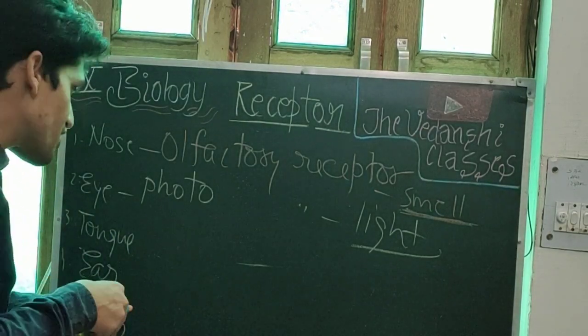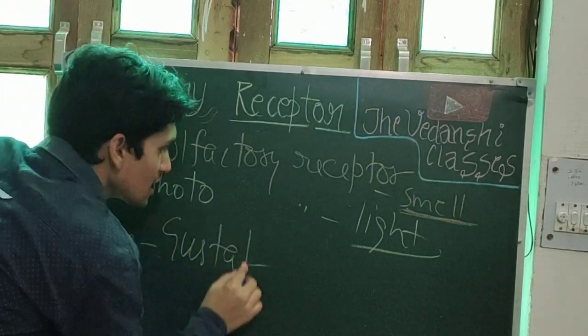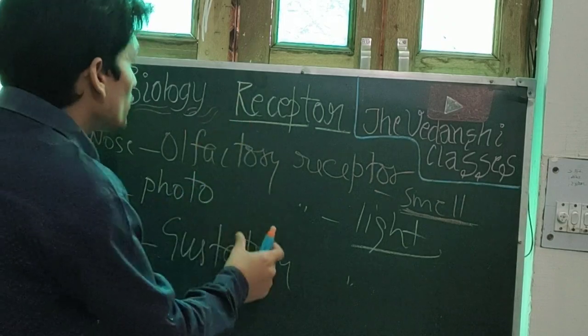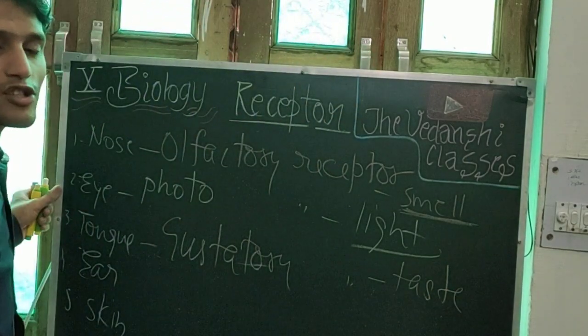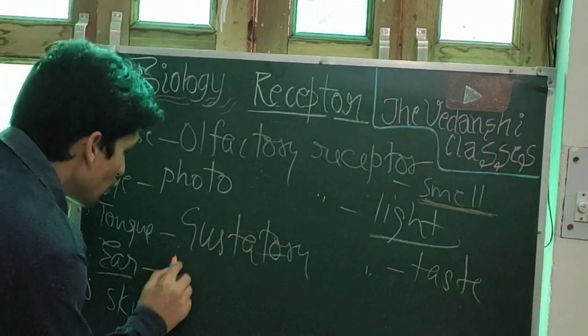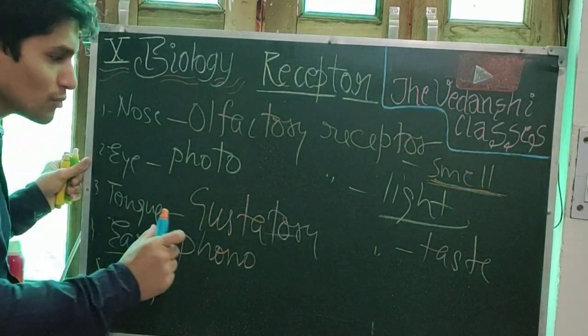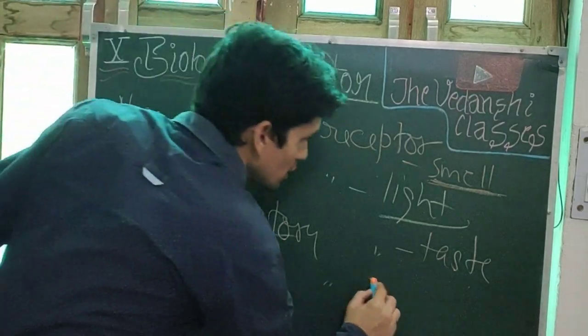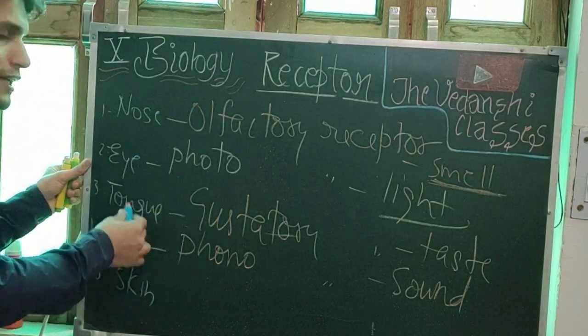For taste, the word is gustatory. Gustatory receptors are found on the tongue, and from these receptors we feel the sense of taste. In the ear, we hear sounds through phonoreceptors. Phonoreceptor cells receive the sense of sound.